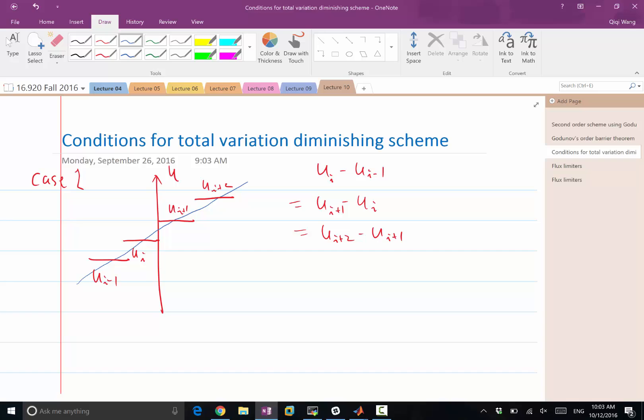So first order accuracy means if we reconstruct a constant function, we should get the exact reconstruction. And second order accuracy means if we reconstruct a linear function.